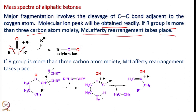What is this rearrangement? As I mentioned, the cleavage occurs on C-C bonds next to the oxygen. These two are quite possible sites for fragmentation. An R radical would come out and we get an acylium ion. If the R group has more than 3 carbon atoms — a longer chain on either side — then McLafferty rearrangement takes place.